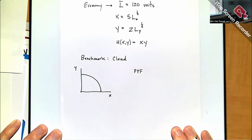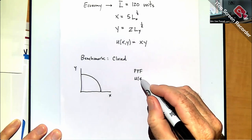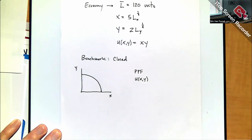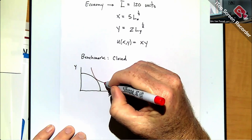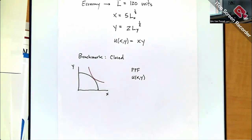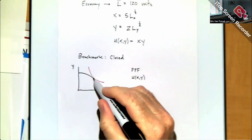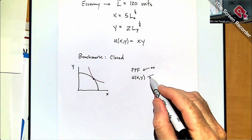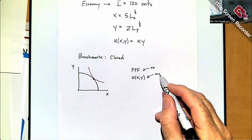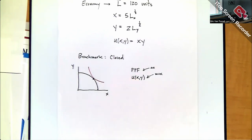For the closed economy, we generate a nonlinear PPF like this. You can graph in the Cobb-Douglas utility function as an indifference curve. The basket we're hunting for is on the PPF, maximizing the utility function. The optimization problem is: maximize the utility function subject to being on the PPF.